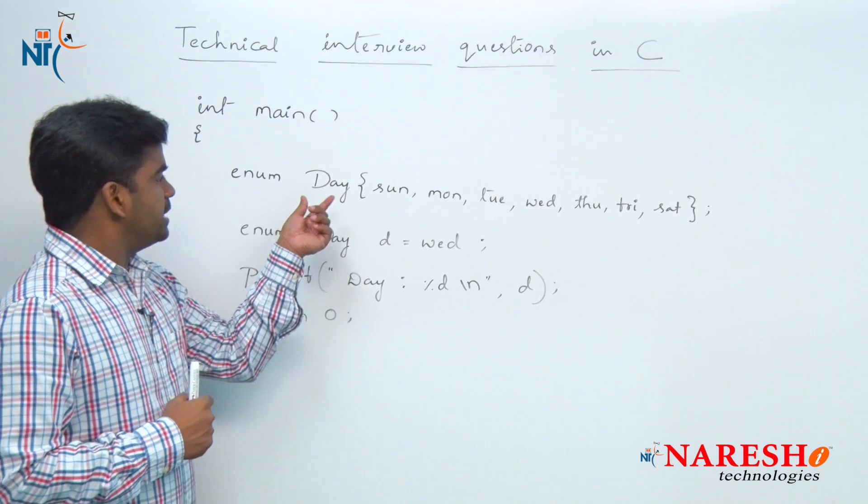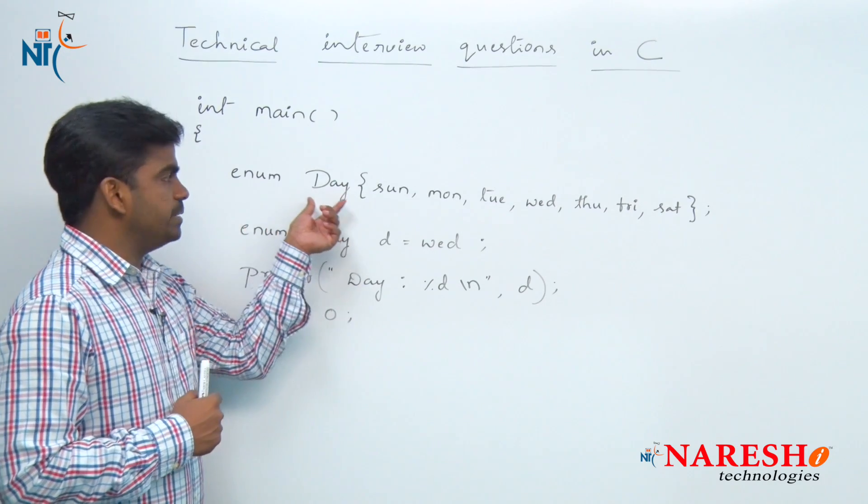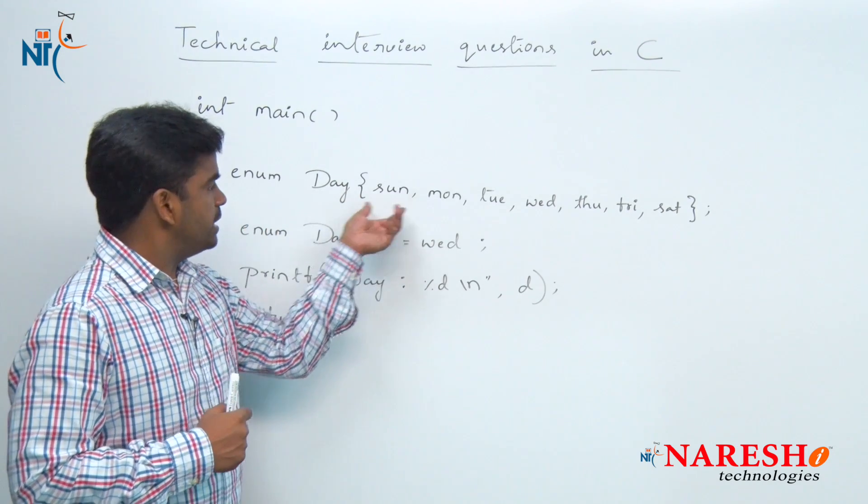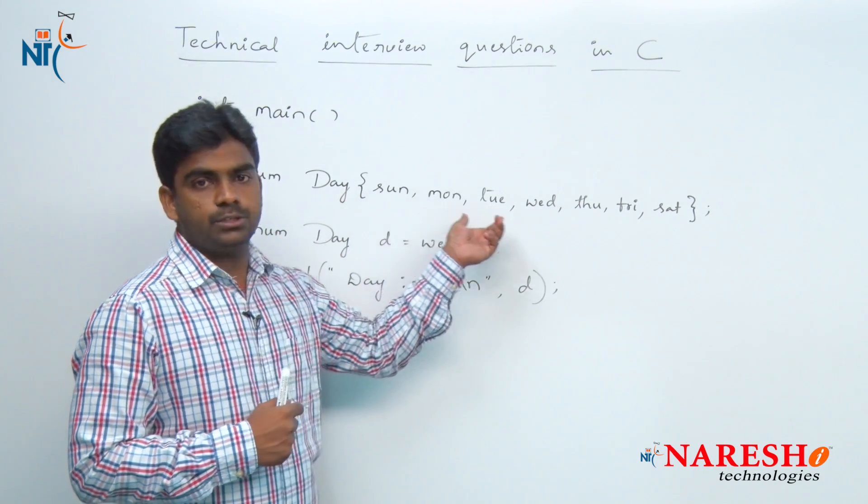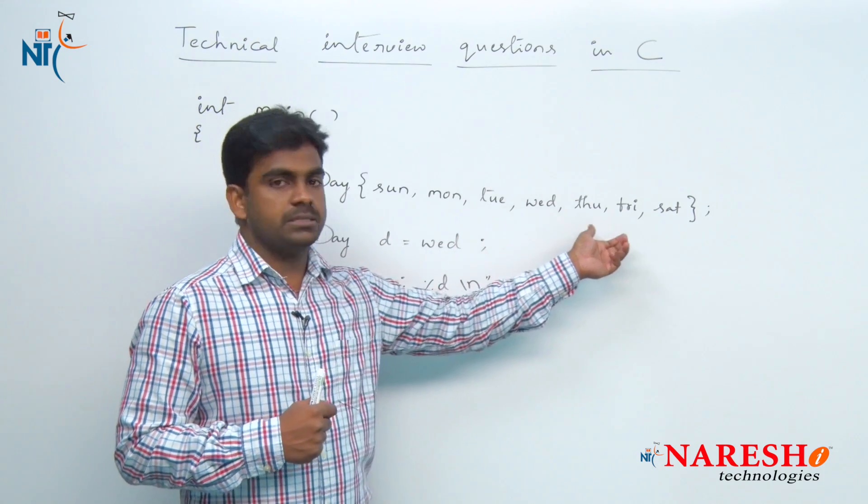Here we are taking one set, set of elements we are taking like days in a week: Sunday, Monday, Tuesday, Wednesday, Thursday, Friday, Saturday.